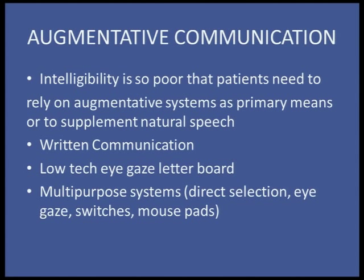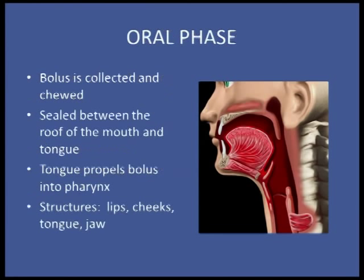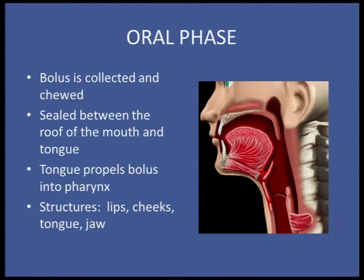Educating patients about swallowing: we want them to understand the phases of swallowing, the impact ALS has on swallowing, the evaluation of swallowing and the swallowing score, dysphagia management, and the G-tube placement conversation. The oral phase involves bolus acceptance, manipulation, and propulsion — involving the lips, cheeks, tongue, and jaw.